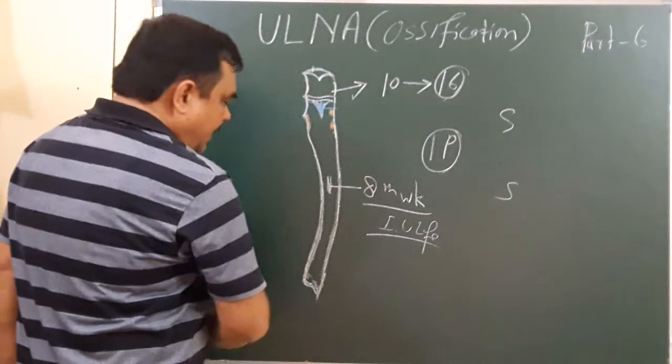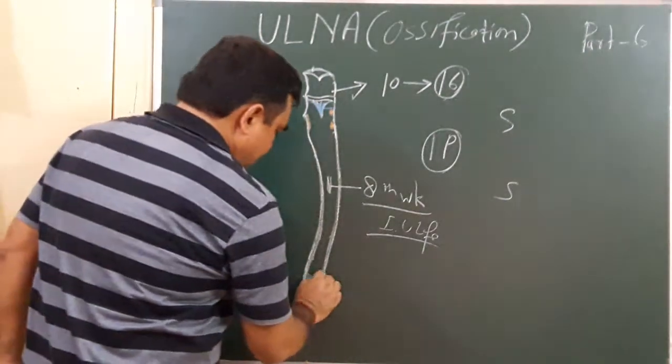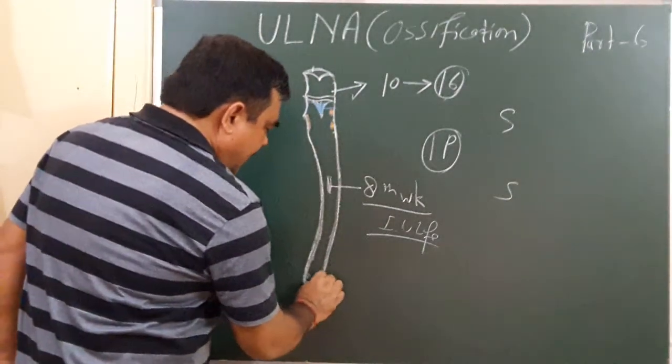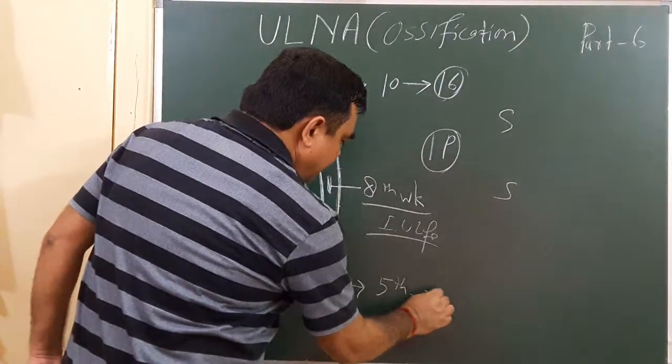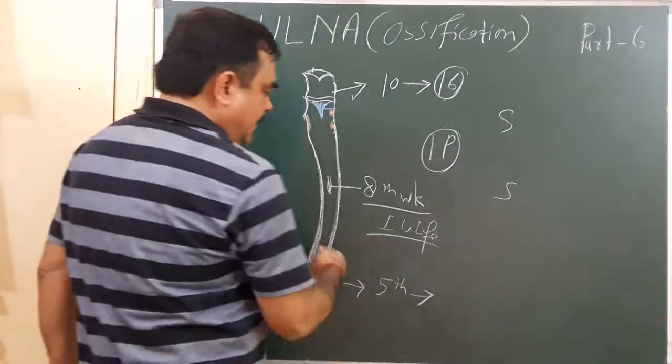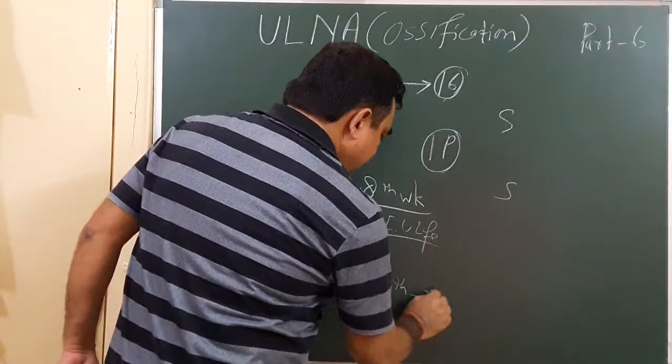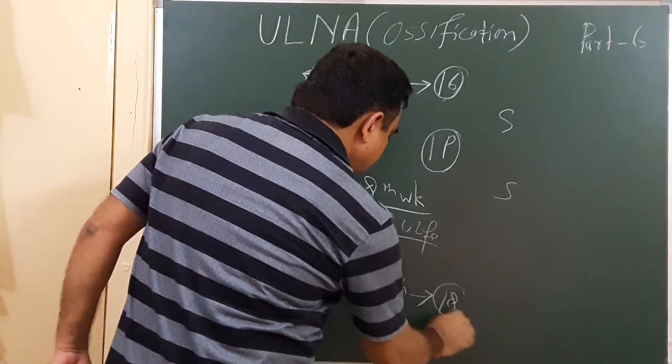For the lower end, the secondary center appears during the 5th year of life and fuses with the shaft and ossifies during 18 years of life.